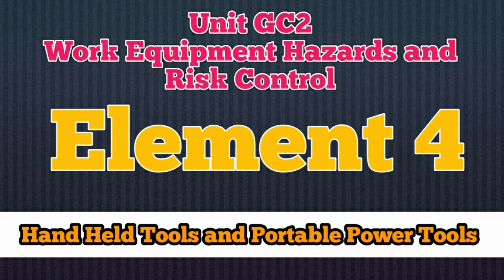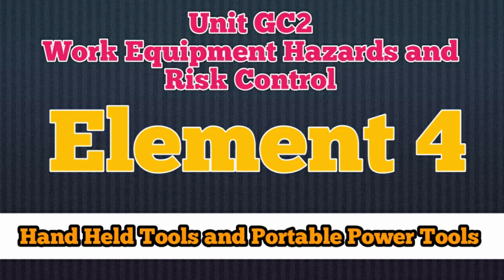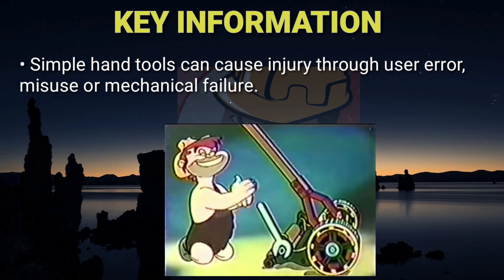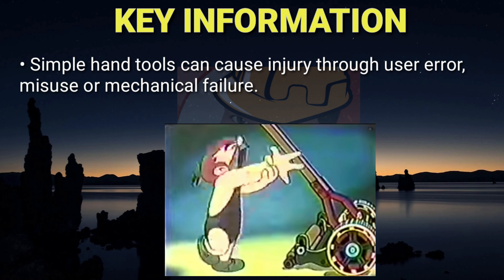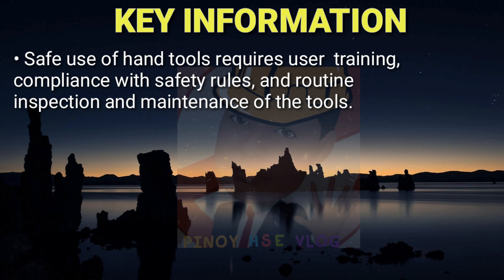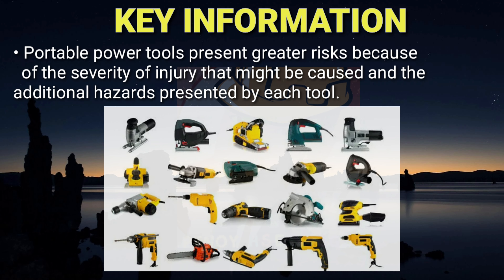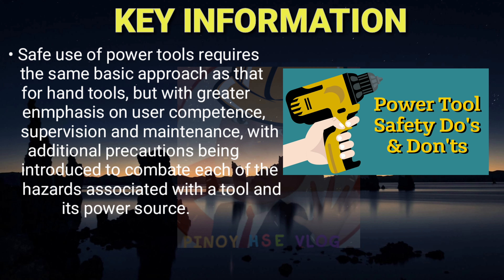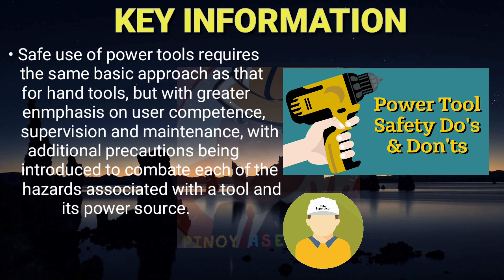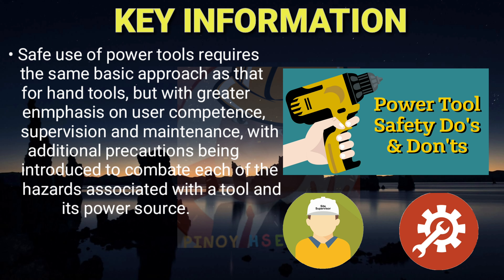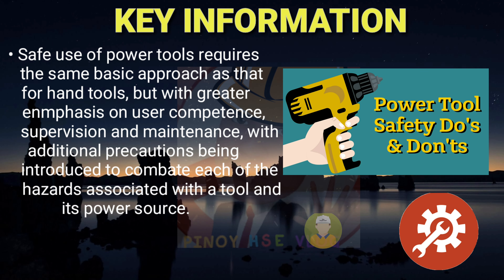Unit GC2: Work Equipment Hazards and Risk Control, Element 4 – Handheld Tools and Portable Power Tools. Simple hand tools can cause injury through user error, misuse, or mechanical failure. Safe use of hand tools requires user training, compliance with safety rules, and routine inspection and maintenance. Portable power tools present greater risks because of the severity of injury that might be caused and the additional hazards presented by each tool.